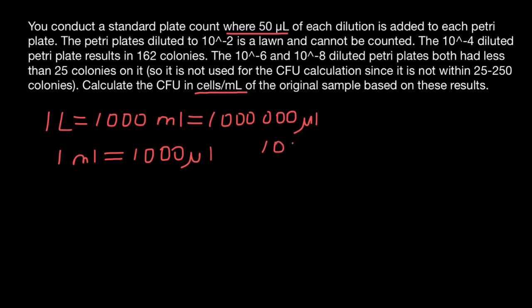So 1000 microliters, which is one milliliter, we have to divide by 50 microliters. So this is what we have started. This is what we have to give an answer, cells per milliliter. So we are going to get here 20.